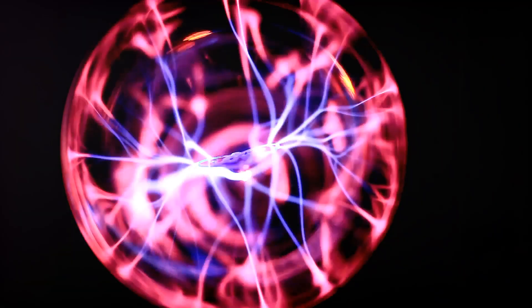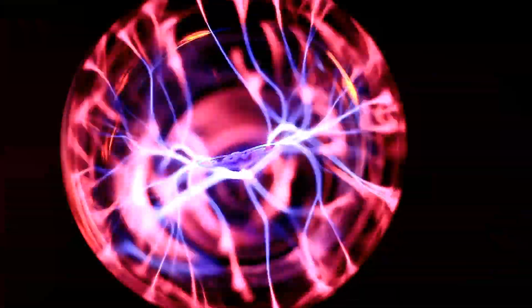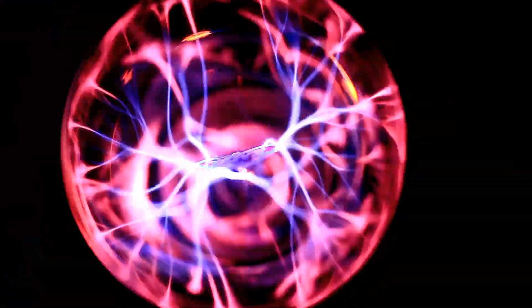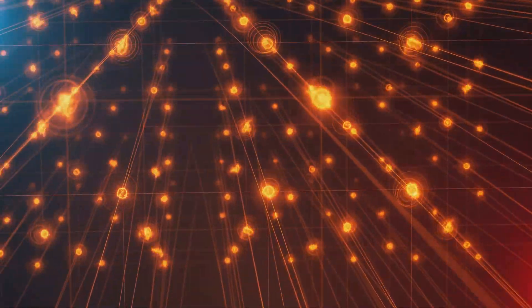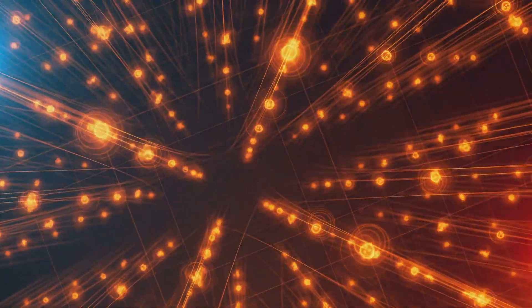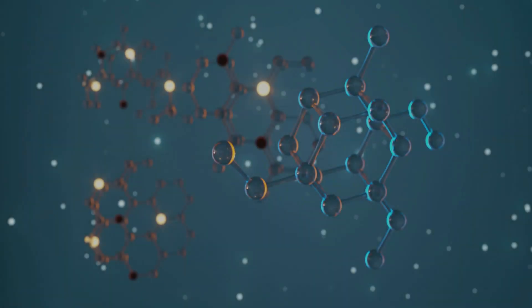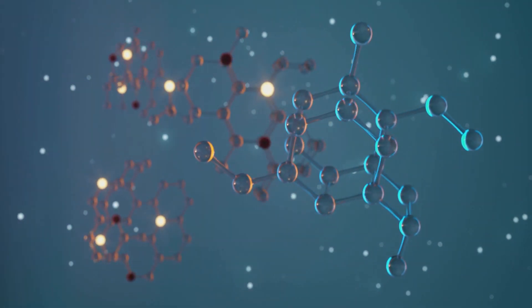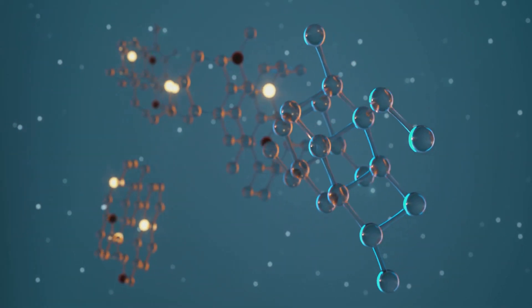Similarly, a quantum particle can be in a superposition of states, existing in all possible states at once. Entanglement, on the other hand, is a strange link between two or more quantum particles. Once entangled, these particles remain connected no matter how far apart they are. Any change to one particle instantaneously affects the others, as if they were communicating faster than the speed of light.